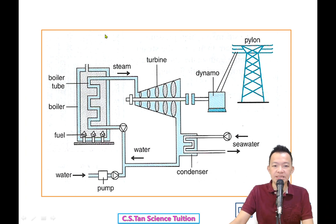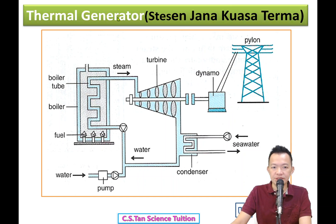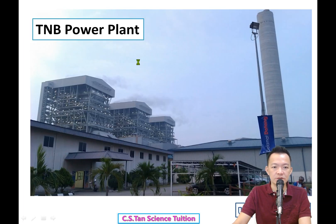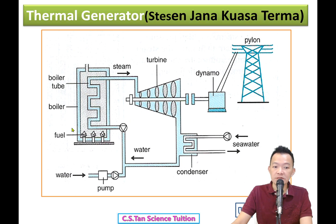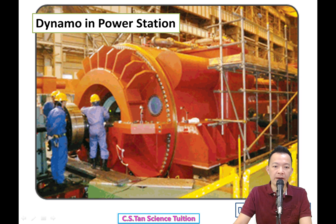How does our country generate electricity? The first method is the thermal generator 热力发电 - using heat to generate electrical energy. In Malaysia, TNB uses fossil fuels like natural gas or coal to boil water. The water becomes steam 水蒸气, which turns the turbine of the dynamo, and finally produces electrical energy 产生电能.